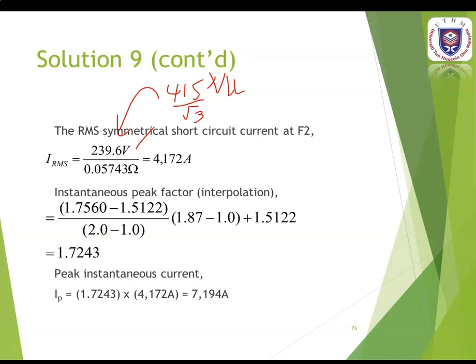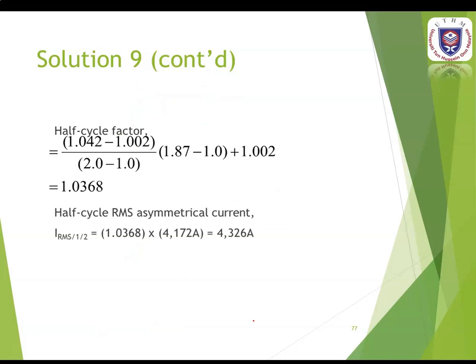To get the peak instantaneous current at F2, use the instantaneous peak factor from the asymmetrical table with interpolation, then multiply by IRMS. For the half-cycle factor, refer to the same table at the half-cycle factor column. Using the same procedure of interpolation and multiplying by IRMS, you get the half-cycle RMS asymmetrical current of 4326 amperes.